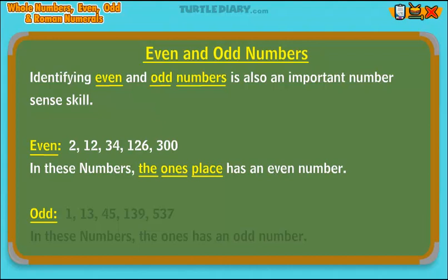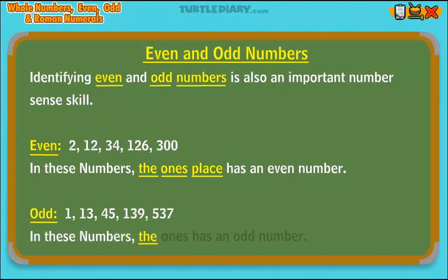Odd numbers: 1, 13, 45, 139, 537. In these numbers, the ones place has an odd number.